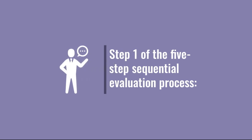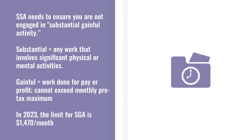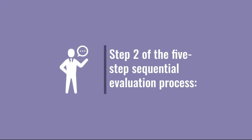Let's discuss step 1 of the five-step sequential evaluation process. The SSA considers your work activity. If you are engaged in what's called substantial gainful activity, the program will consider you not disabled and you will not qualify for benefits. Substantial gainful activity is work that involves significant physical or mental activities, usually done for pay or profit. In 2023, the limit for substantial gainful activity will be $1,470 per month pre-tax. For blind individuals, the limit will be different. If the SSA determines you are not engaged in substantial gainful activity, it moves on to step 2.